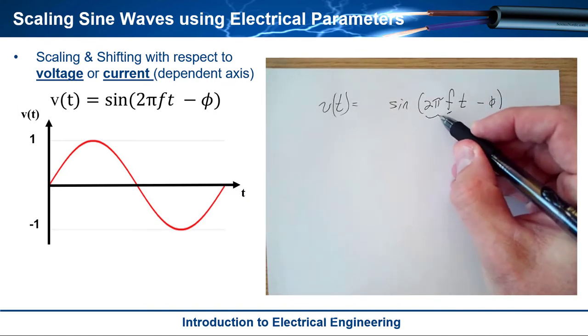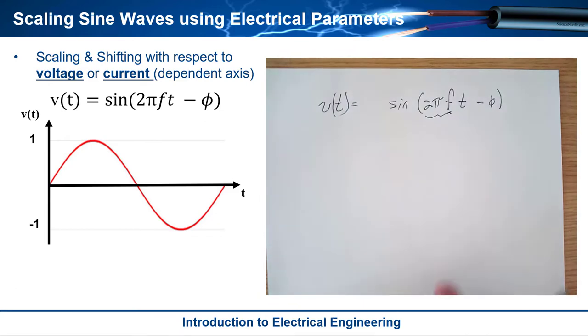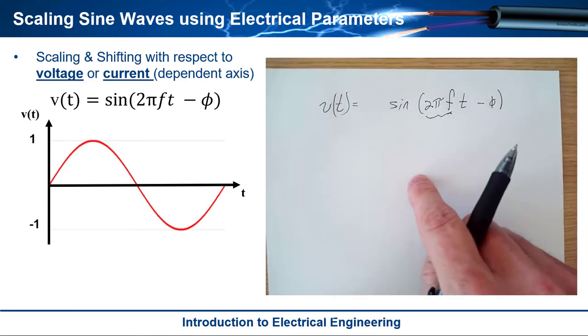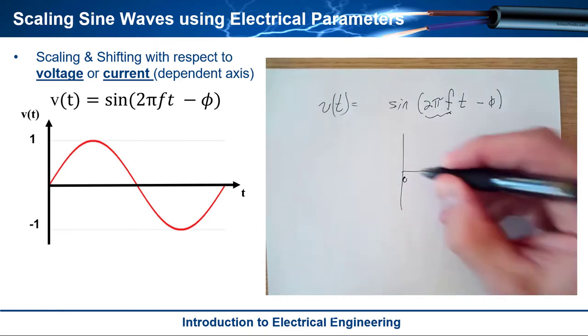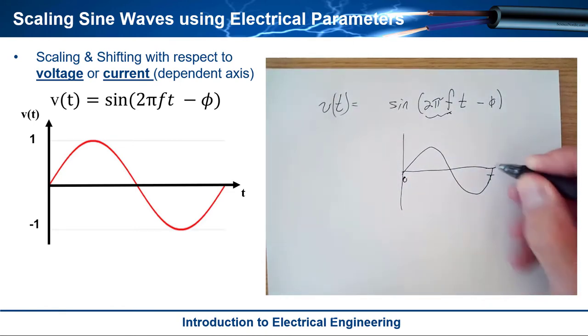And this is how we scale the period so that instead of going from 0 to 2π it goes from 0 to t. Okay so it goes from 0 to t and that allows us to scale the period.